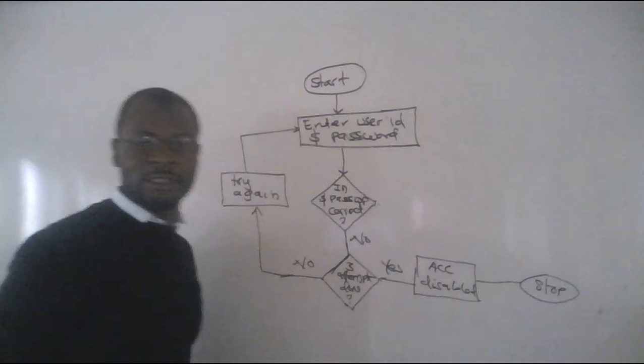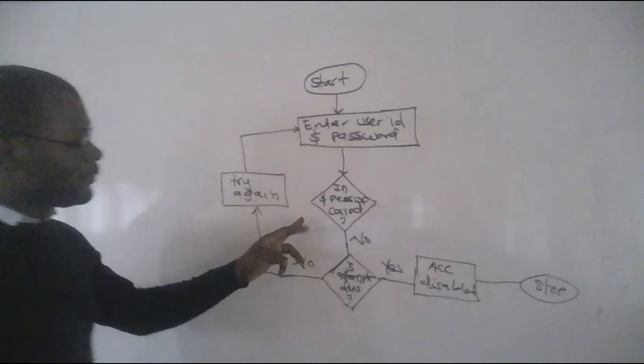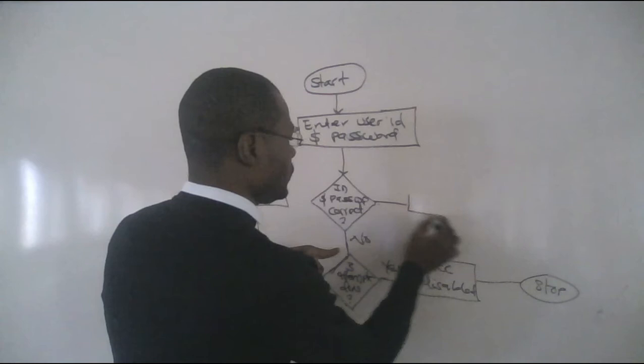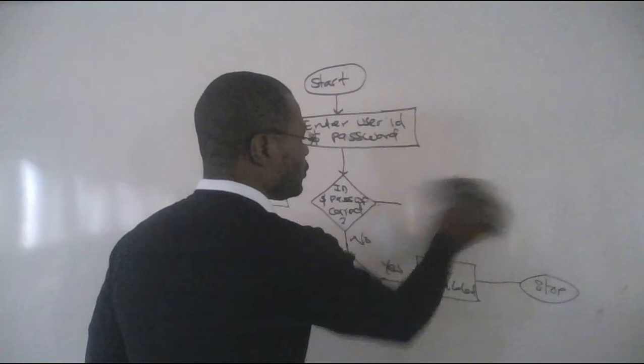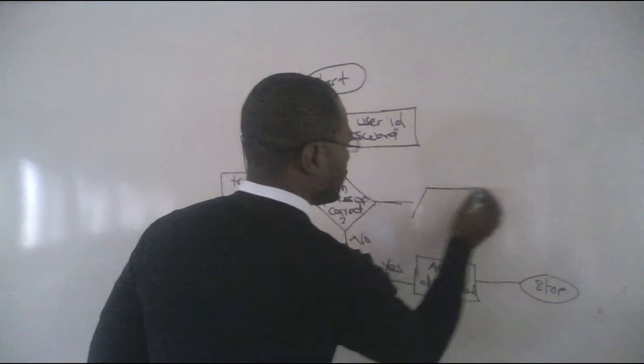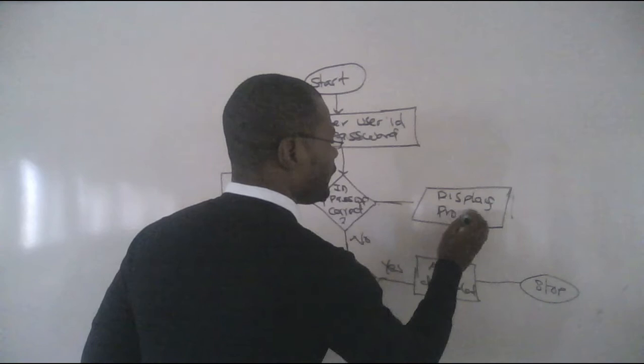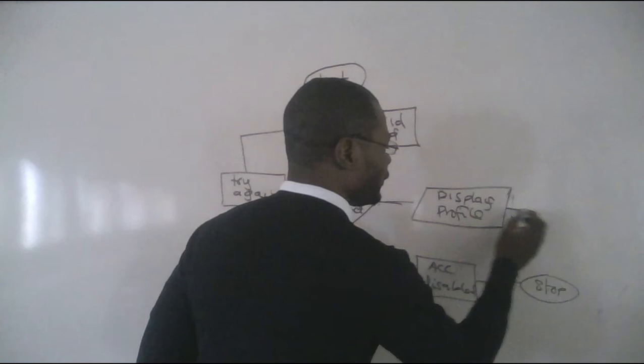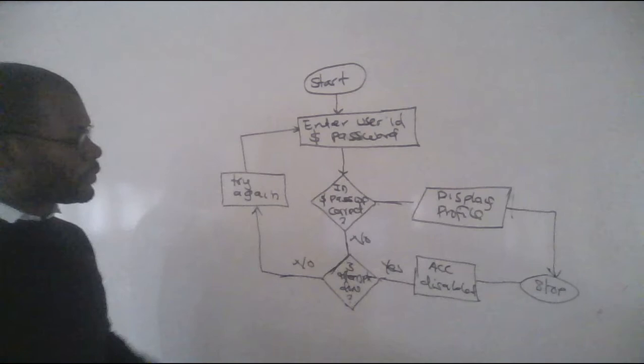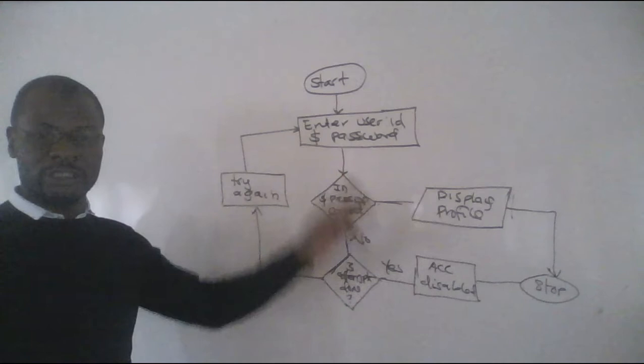But when you enter the user ID and password, and they are both correct, so here it was no, then here it will be yes. If it is yes, we are going to display profile. We are going to use the input-output parallelogram to display profile so that you can actually see your timeline there. And now, since you are very happy you've logged in, the program is supposed to terminate. This is one of the ways we can write the program using a flowchart.